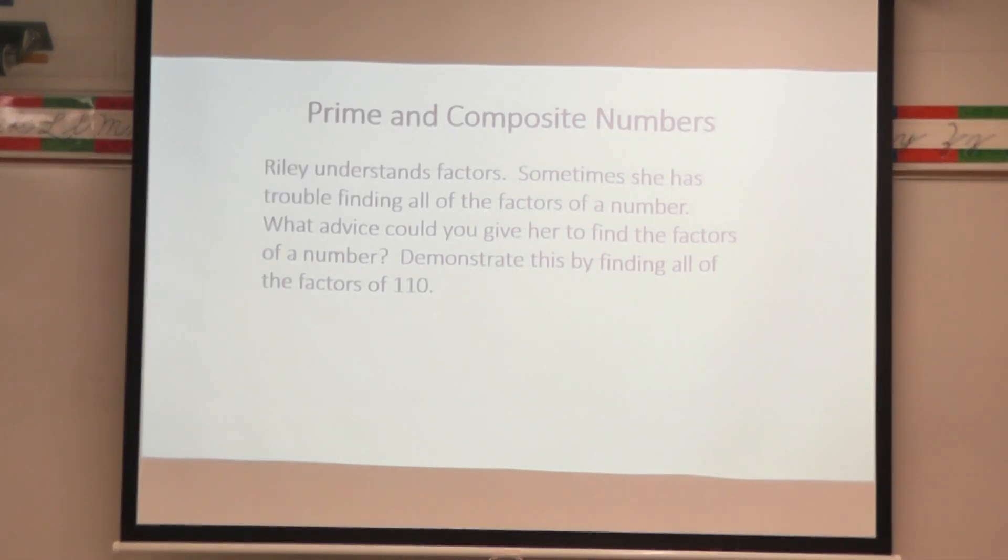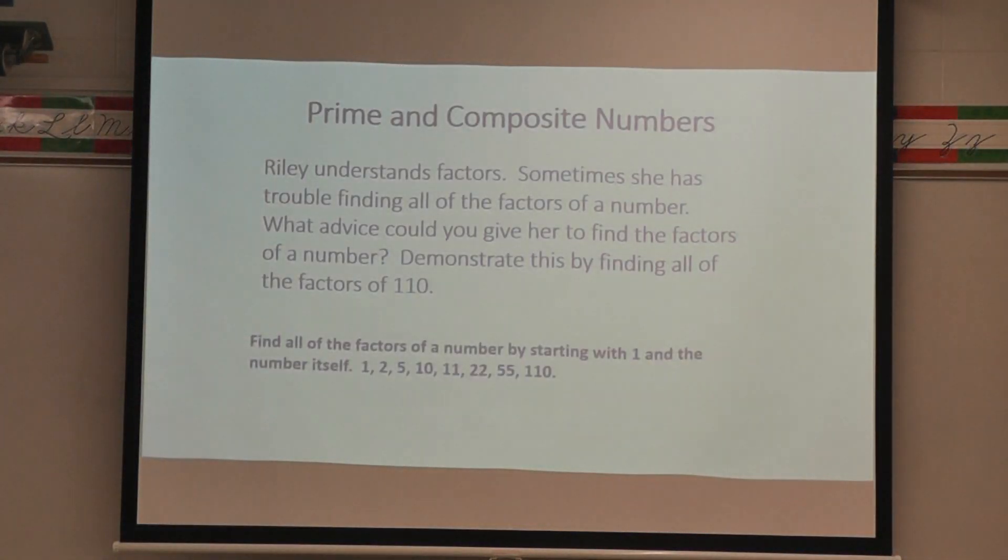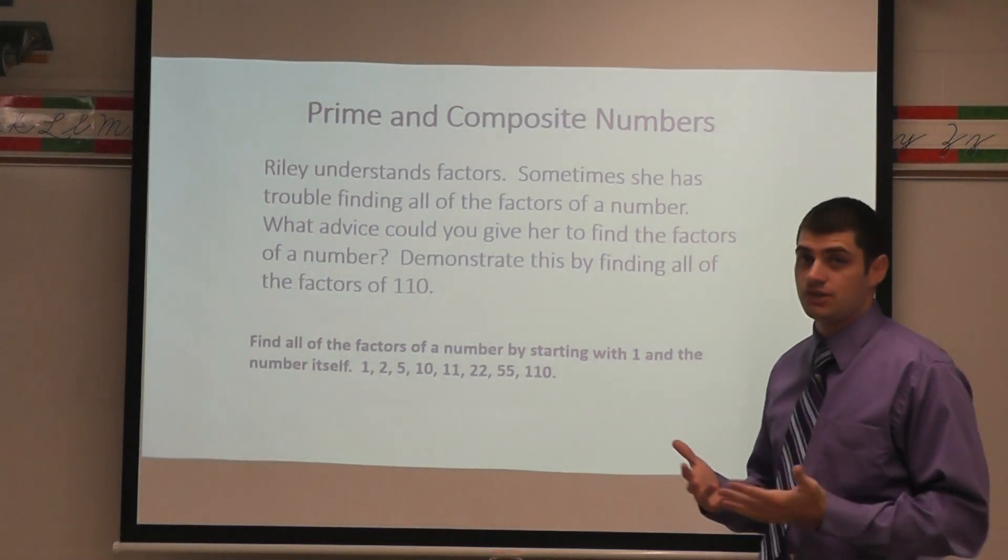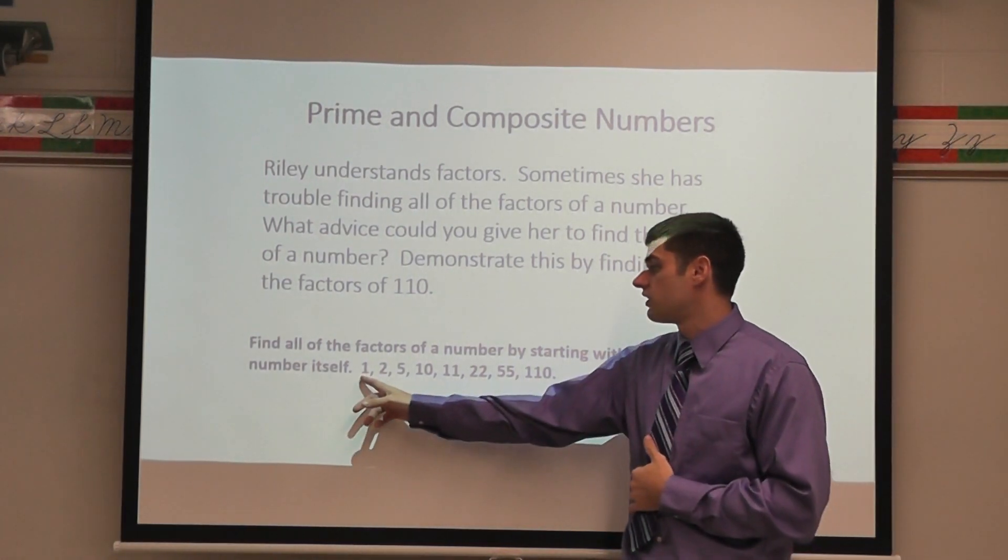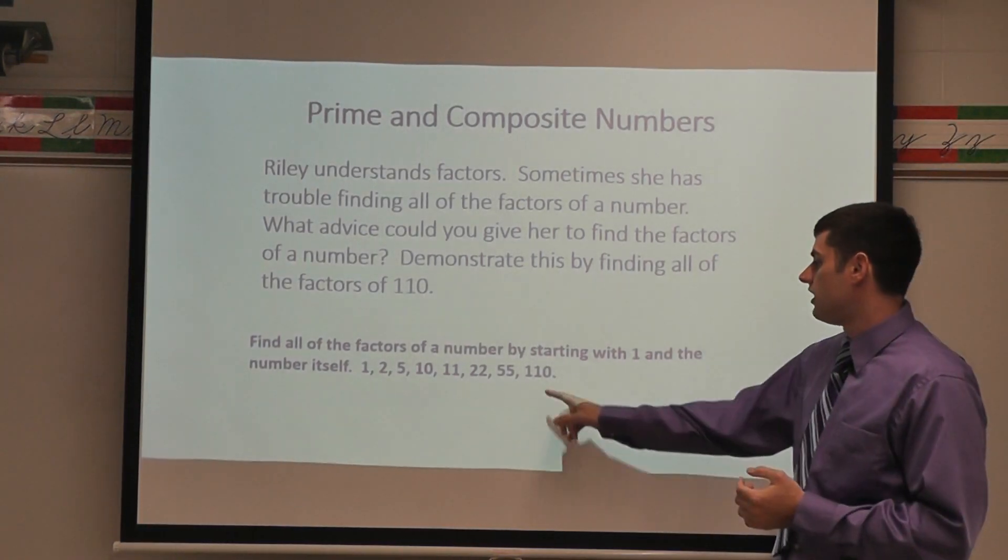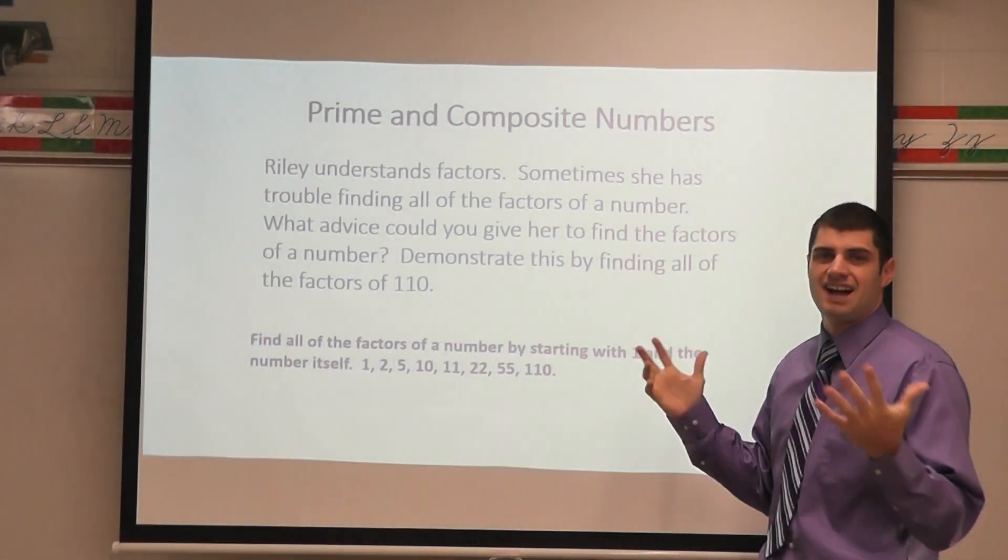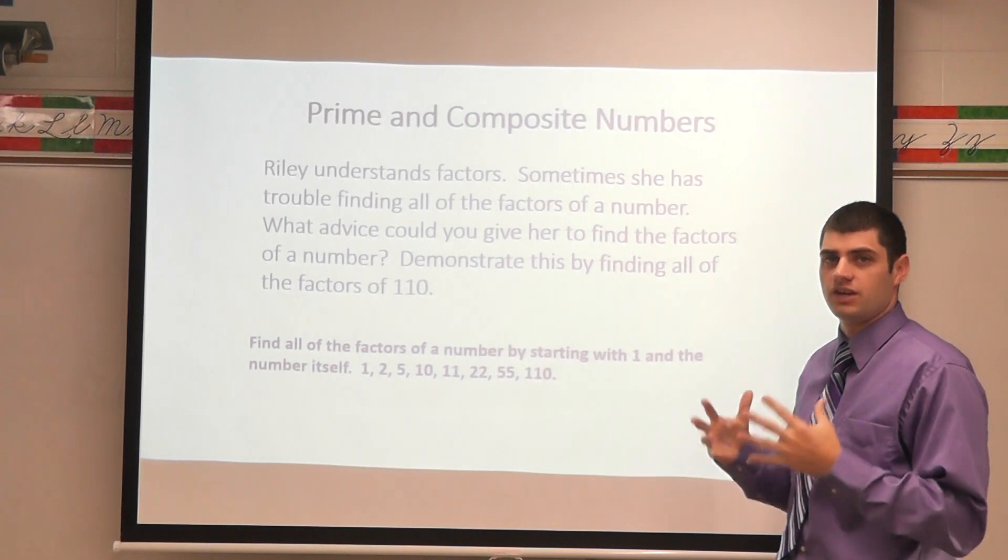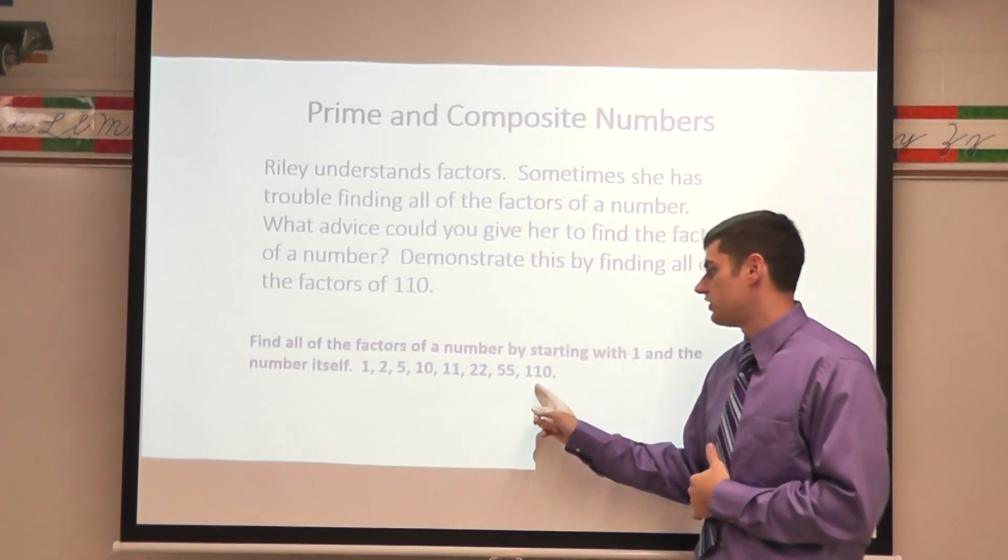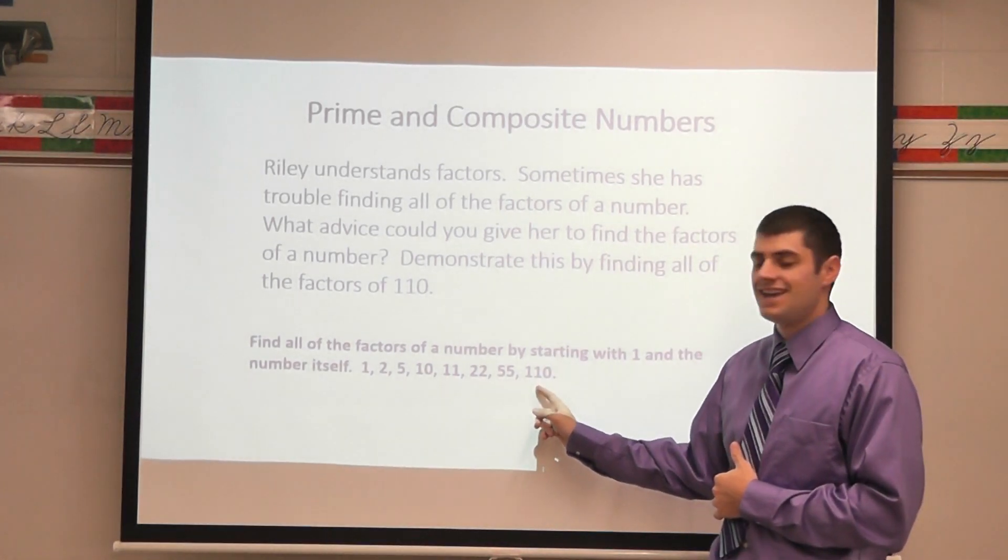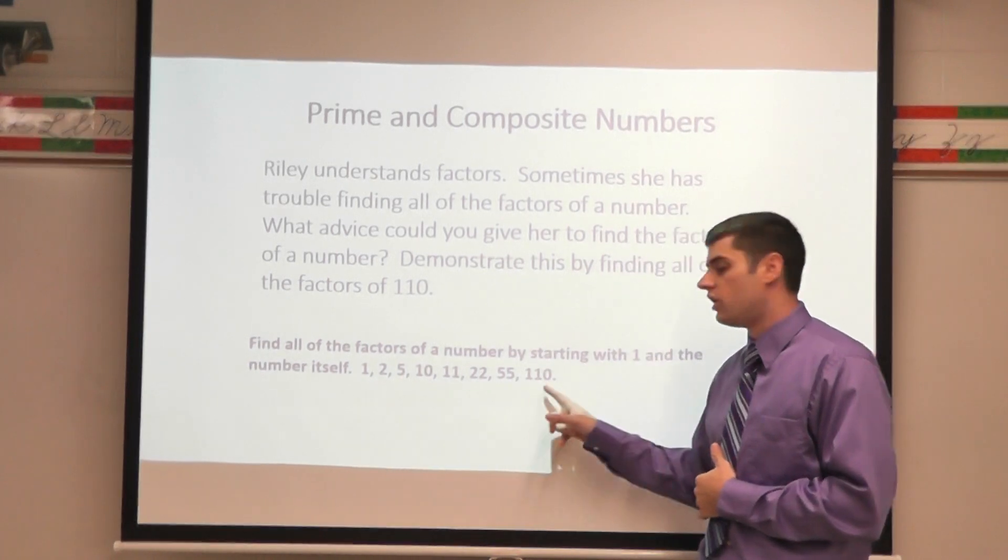So there's multiple ways you can do this and you may have a different strategy at home. I'm just going to share with you one of my strategies that I use. I always start with the number one and the number itself. For me I always think this is the easiest way to kind of figure it out because one times 110 equals 110 and this is a factor pair. One and 110.